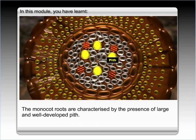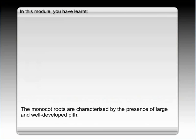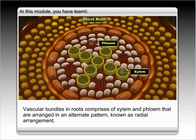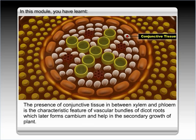The monocot roots are categorized by the presence of a large and well-developed pith. Vascular bundles in roots comprise xylem and phloem arranged in an alternate pattern known as radial arrangement. The presence of conjunctive tissue between xylem and phloem is the characteristic feature of dicot roots, which later forms cambium and helps in the secondary growth of the plant.